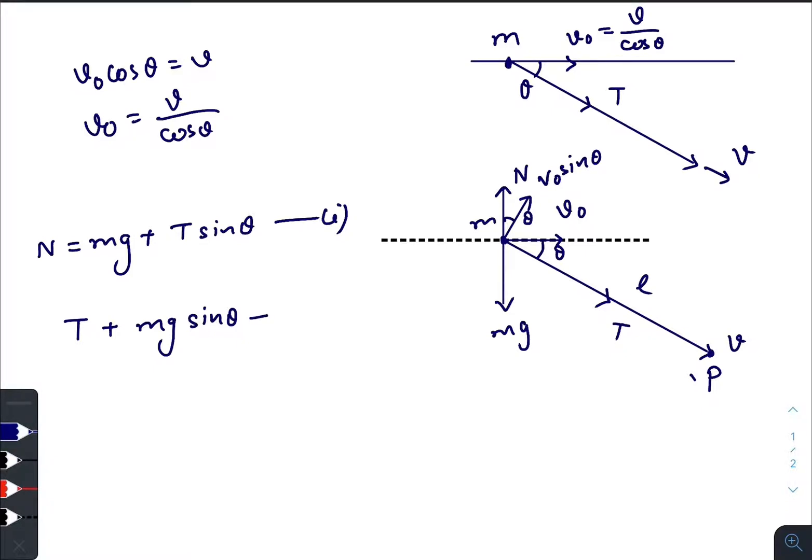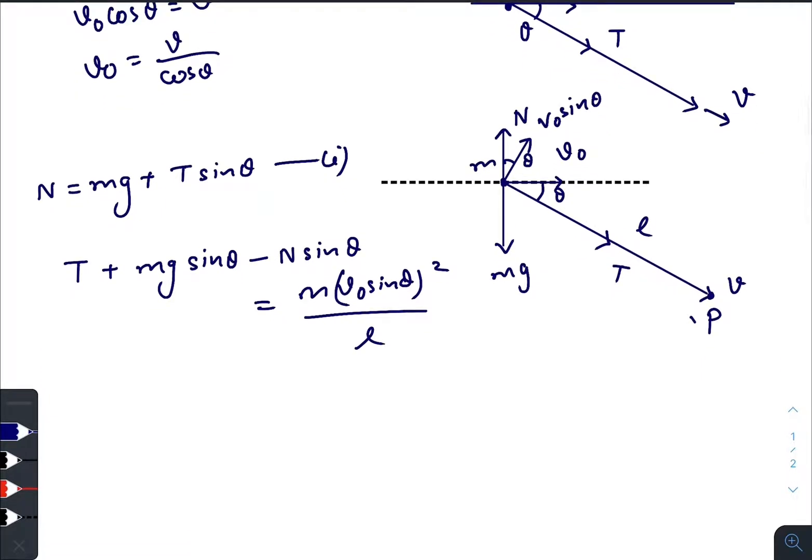Minus N sine theta equals M times V0 sine theta whole square divided by L.